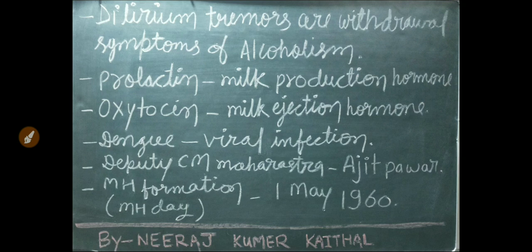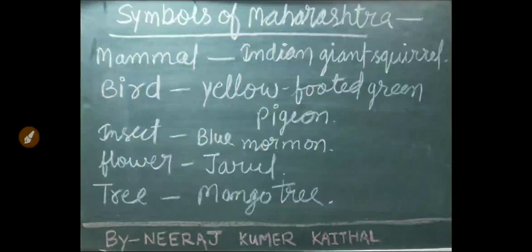Dengue is a viral infection. Maharashtra Day is May 1, 1960. Important symbols of Maharashtra: mammal — Indian giant squirrel; bird — yellow-footed green pigeon; insect — blue mormon; tree — mango tree.